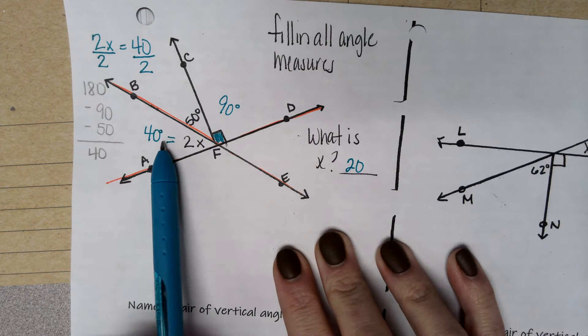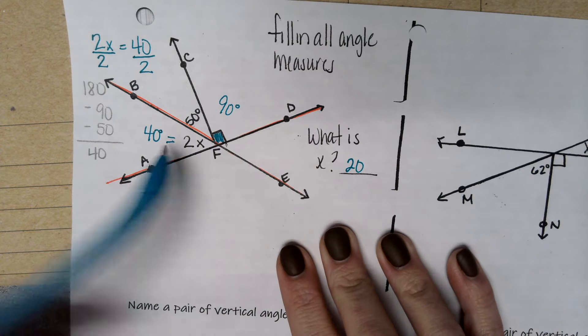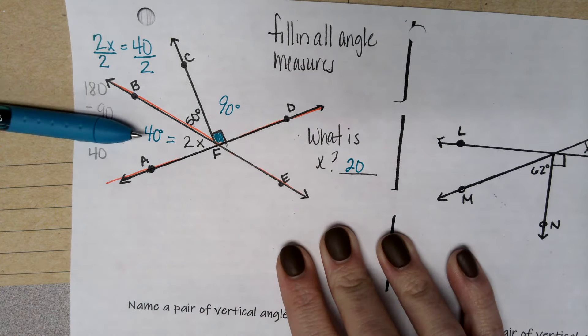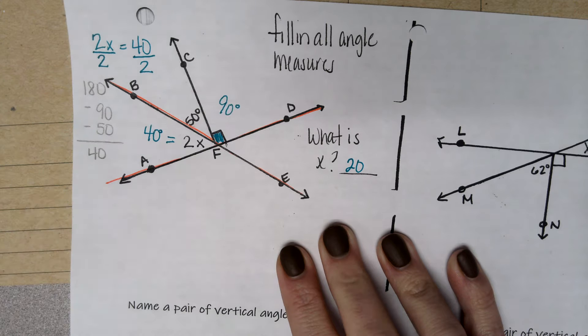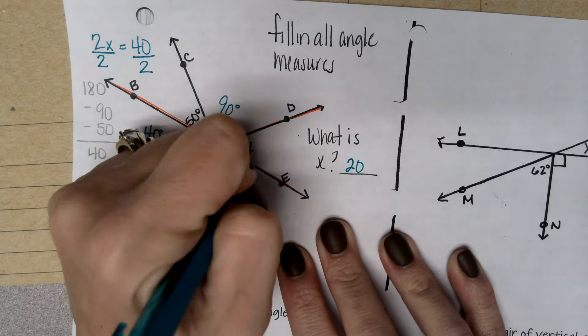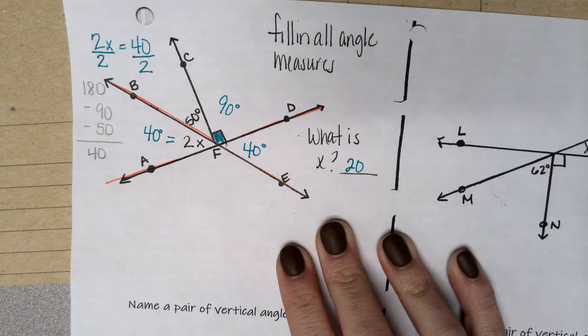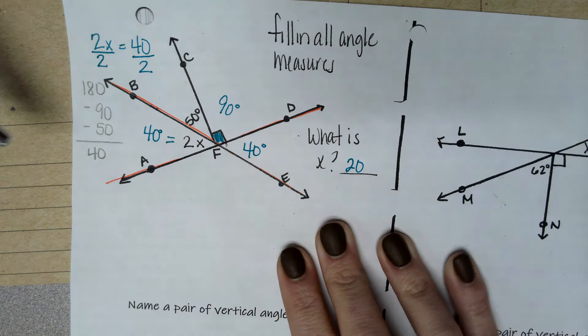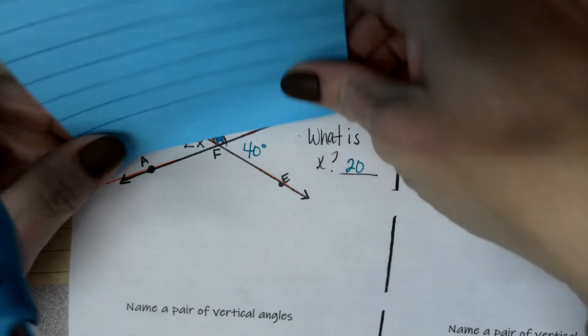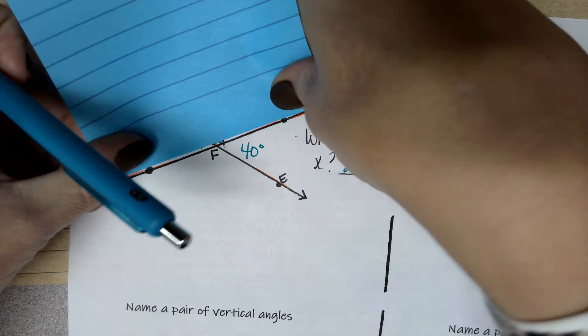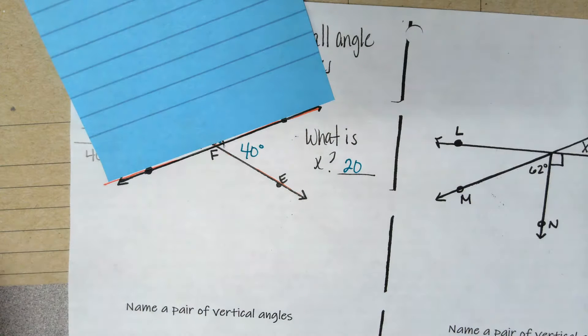We learned that vertical angles are equal. They're congruent. So if you look, this 40-degree angle is directly across from this 40-degree angle. So we can add 40 here. And now we know we don't need to do anything else with the rest of these angles up here. So I'm going to cover them up using my paper.